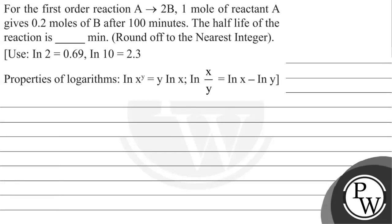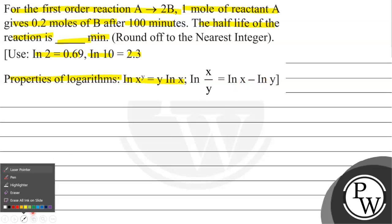Hello children, let's read this question. The question says: for the first order reaction A gives 2B, 1 mole of reactant A gives 0.2 moles of B after 100 minutes. The half-life of the reaction is how many minutes? We have ln2 = 0.69, ln10 = 2.3, and the logarithm properties: ln(x^y) = y·lnx and ln(x/y) = lnx − lny.